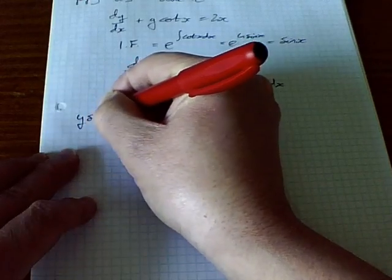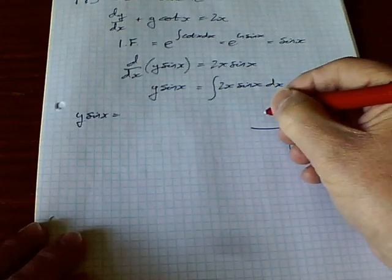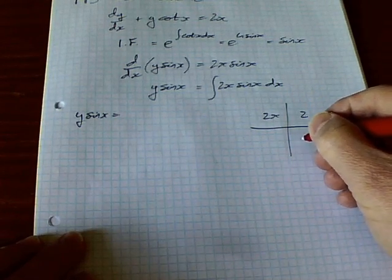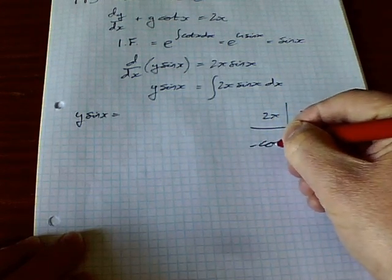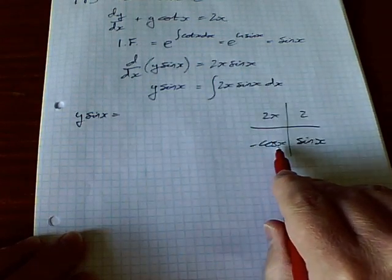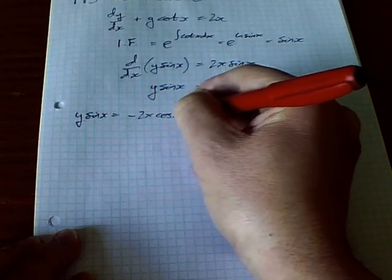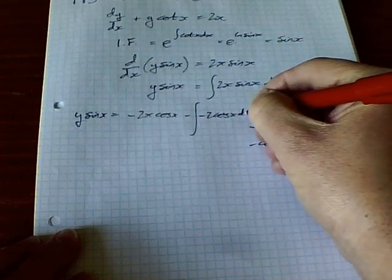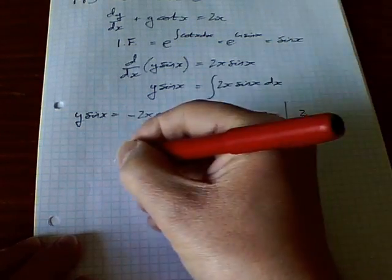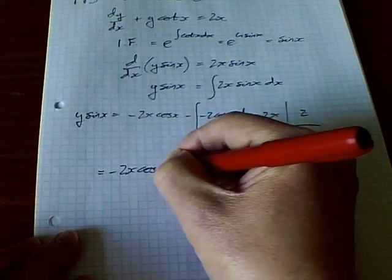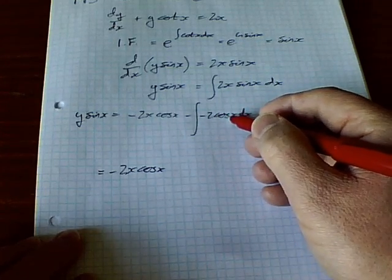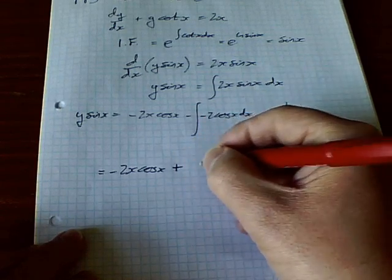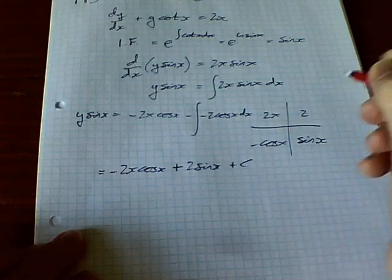My u is going to be 2x, then du is 2, and dv is sin x, so v is minus cos x. The product gives minus 2x cos x minus the integral of 2 times minus cos x, being very careful about that double negative. That equals minus 2x cos x, and the integral of minus cos x is minus sin x, so from the double negative we get plus 2 sin x plus arbitrary constant c.